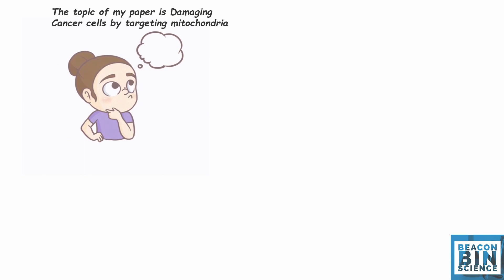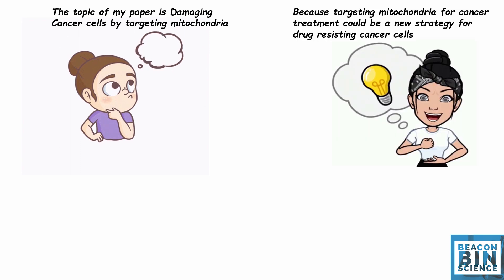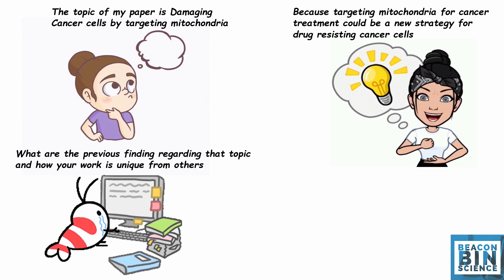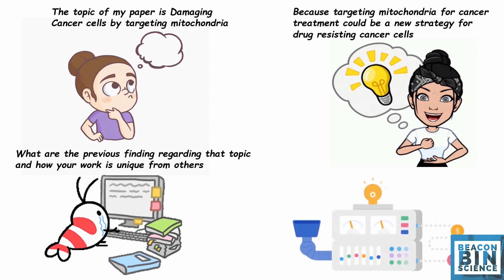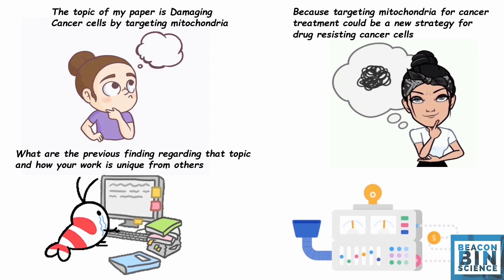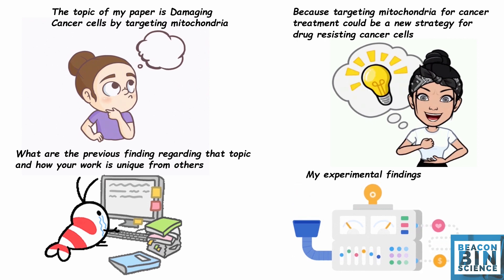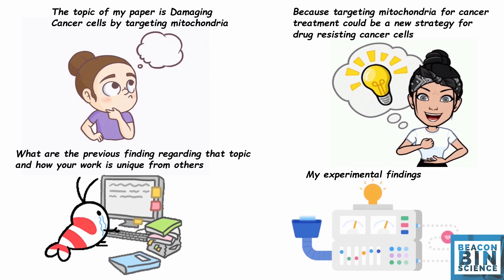Let's understand how to make your outline step by step with an example. Suppose the topic of your paper is 'Damaging Cancer Cells by Targeting Mitochondria.' Give your research a proper heading. Next, explain why you are targeting the mitochondria. Find the literature on that topic — search for papers where similar research has been done, note their findings. Third is the experimental finding: how you damaged the mitochondria and what results you obtained.